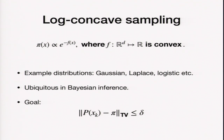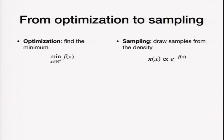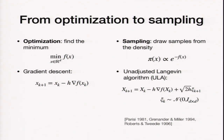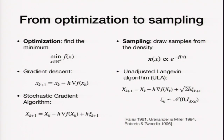The role of log-concavity in sampling is similar to that of convexity in convex optimization. In optimization, you try to minimize f(x); in sampling, you try to draw samples from the density e to the minus f. If the function is convex, the first algorithm that comes to mind is gradient descent. In sampling, you have the analogous unadjusted Langevin algorithm, which takes gradient steps and adds a noise step.